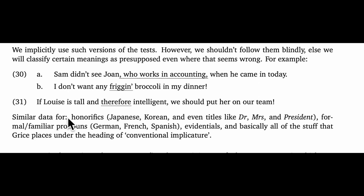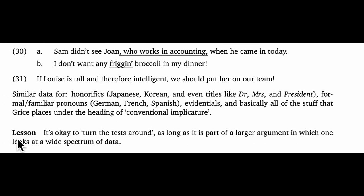So what should we do? I'm inclined to be pragmatic. It's okay to informally turn the tests around, as long as that's part of a larger argument in which one looks at a wide spectrum of data. Gather lots of data, consider the discourse behavior of the item as well, and then the picture will become reasonably clear even sticking with just the weaker versions of our hypotheses.